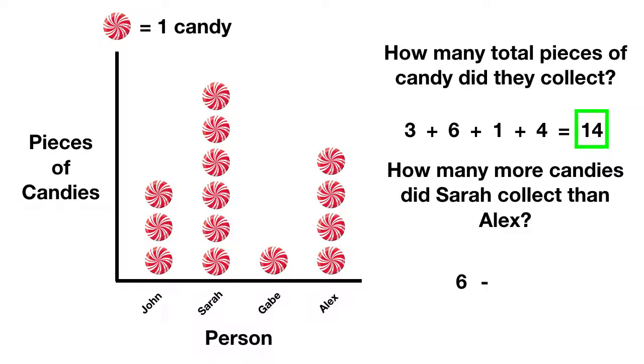And if we're comparing, we can subtract Alex's, one, two, three, four. When we solve this, we found that Sarah collects two more candies than Alex.